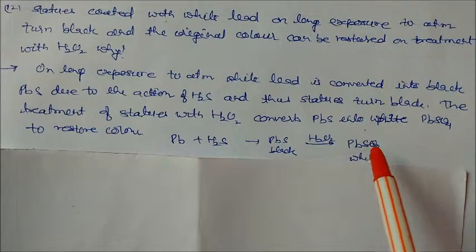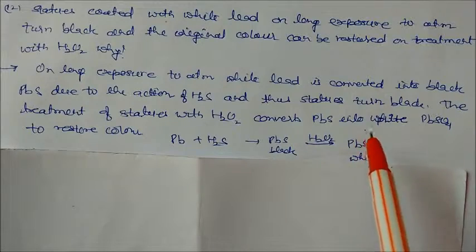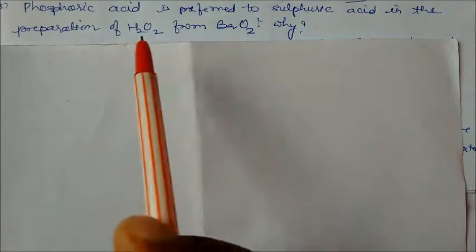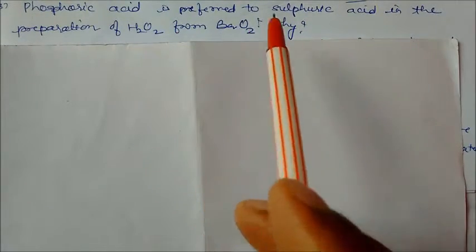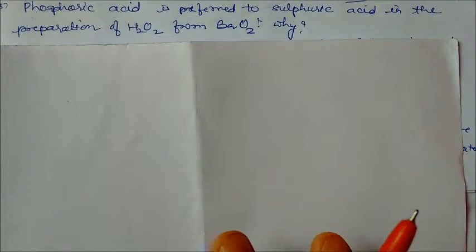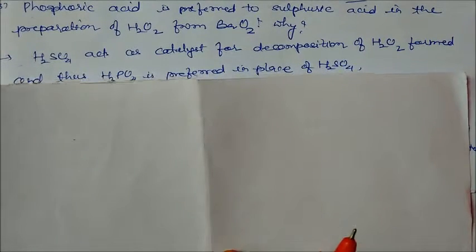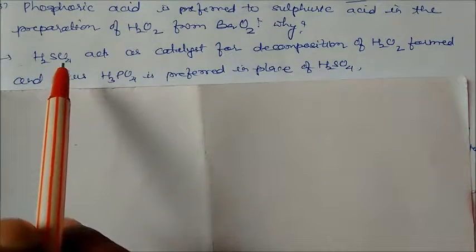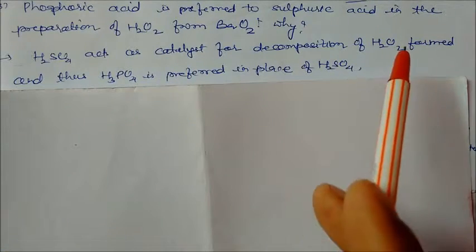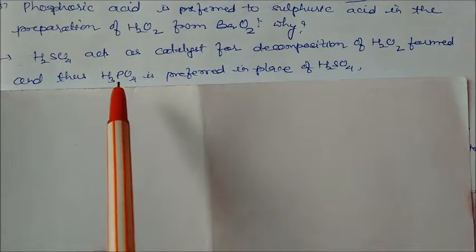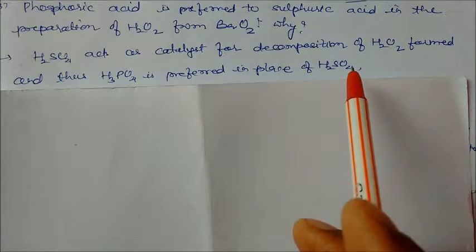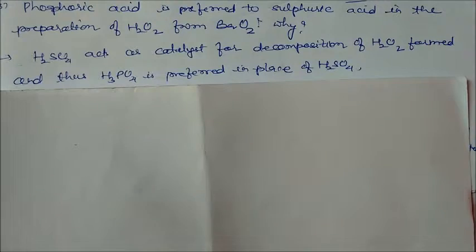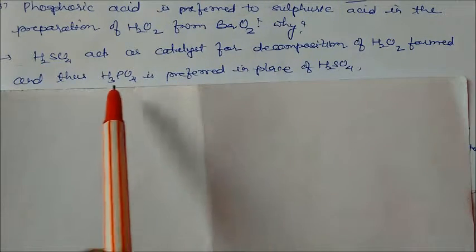Phosphoric acid is preferred to sulfuric acid in the preparation of H2O2 from barium peroxide. Why? Sulfuric acid acts as a catalyst for decomposition of H2O2 that is formed, so H3PO4 is preferred in place of H2SO4. This is the reason why H2SO4 is not preferred and H3PO4 is preferred.